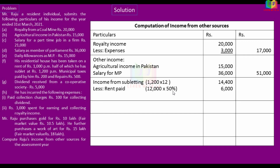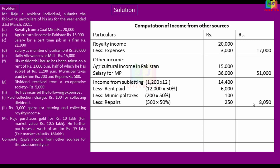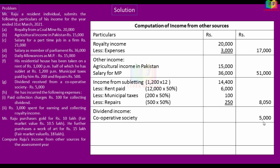Rent received is Rs. 1,200 per month, which is Rs. 14,400 per year. Rent paid is Rs. 1,000 per month, i.e., Rs. 12,000 per year; 50% of that is Rs. 6,000 to claim. Municipal tax paid is Rs. 200 — since let-out property is 50%, that is Rs. 100. Repairs are Rs. 500; let-out property 50% is Rs. 250. Total deductions claimed are Rs. 8,050. This is income from subletting. Next, dividend received from cooperative society is Rs. 5,000. Since it is less than Rs. 10,000, it is not exempt; we have to pay tax on the gross amount.